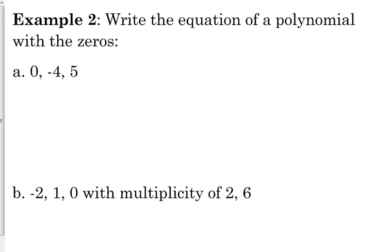If they ask us to write the equation of a polynomial with the zeros, this just changes the way that we express our answer. The last one said write the standard form equation that has the solutions, so we set it up like an equation. If they ask us for the equation of a polynomial that has the zeros, then we're going to set it up like a function. I prefer that you write it as f of x equals. If we have a zero of zero, that's just going to be an x in the front of our equation. A zero of negative 4 means our linear factor is x plus 4. And with 5, that would be x minus 5.